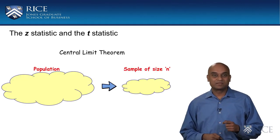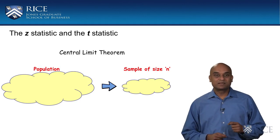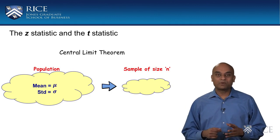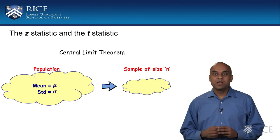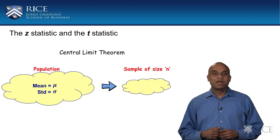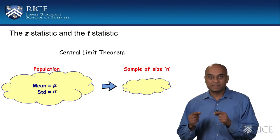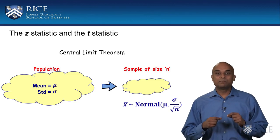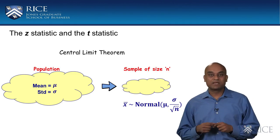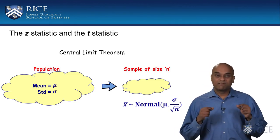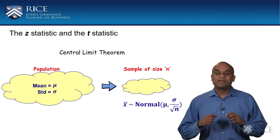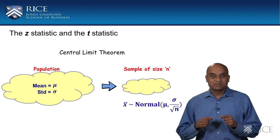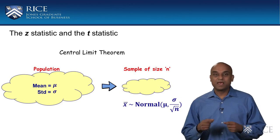When we covered the central limit theorem in the second course of this specialization, we learned that it is a very important link between a population and a sample. In particular, it says that if we have population data with some unknown population mean mu and a population standard deviation sigma, and if we draw a random sample of size n from this population, then the sample mean has a normal distribution with a mean equal to the population mean and a standard deviation equal to the population standard deviation divided by the square root of sample size. In terms of notation, x-bar is the sample mean, mu is the population mean, sigma is the population standard deviation, and n is the sample size.